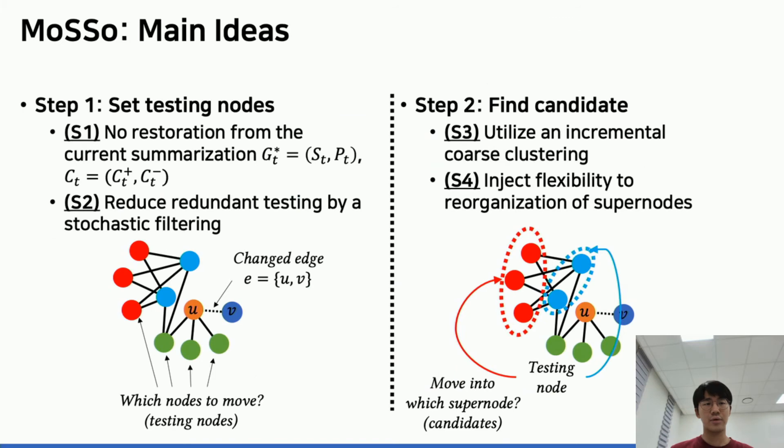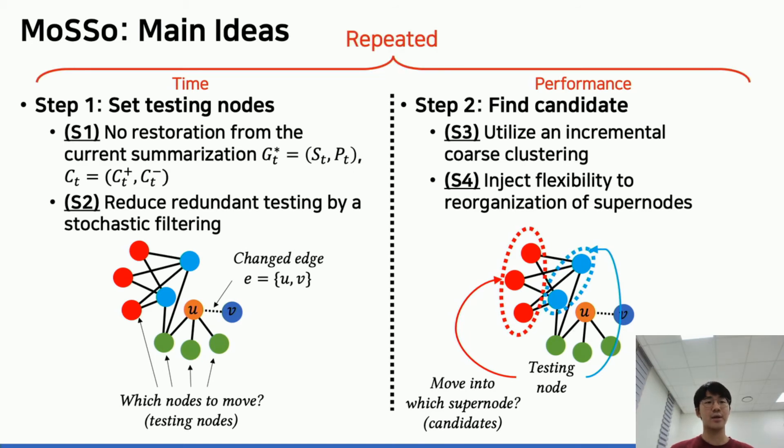Now let's move on to more technical parts. Our approach consists of two steps: set testing nodes and find candidates. The first part is mainly concerned with execution time and the second part has to do with compression rates. For the first part, we focus on sampling testing nodes without full recovery and reducing redundant testing. For the second part, we use incremental coarse clustering and encourage reorganization of super nodes.